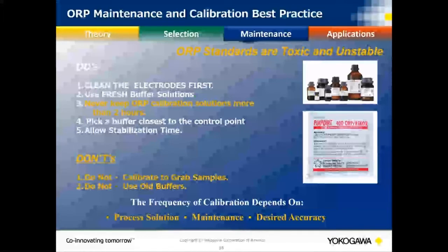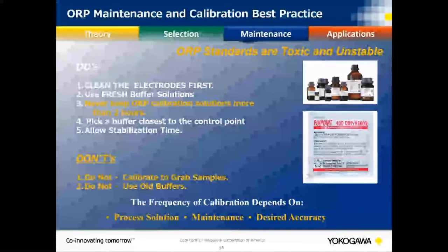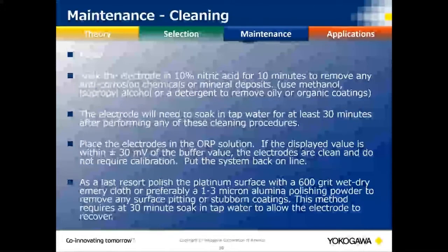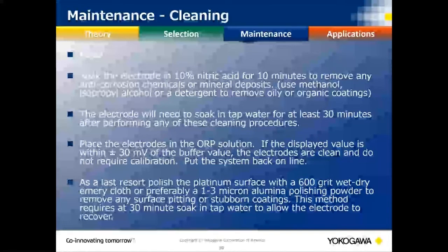Pick an ORP solution closest to your control point, since most ORP calibrations are one-point. Always allow time for stabilization. Avoid grab samples if possible — when comparing a grab sample to a lab result without an independent third-party standard, you end up playing 'who's right, who's wrong' when readings drift. Using known solutions is best practice.